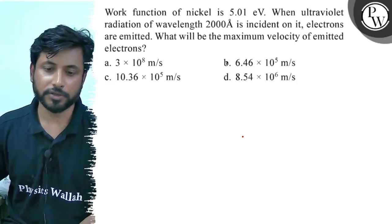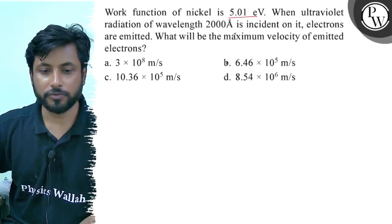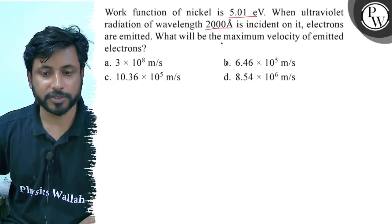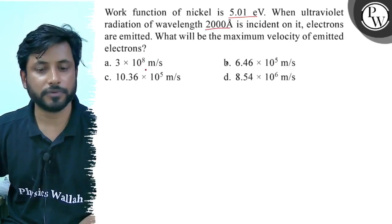Hello everyone, let us see this question. Work function of a nickel is 5.01 electron volt. When ultraviolet radiation of wavelength 2000 angstrom is incident on it, electrons are emitted. What is the maximum velocity of emitted photoelectrons?